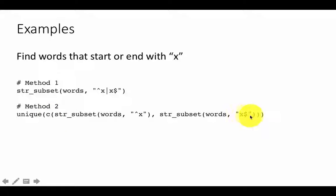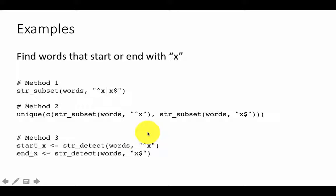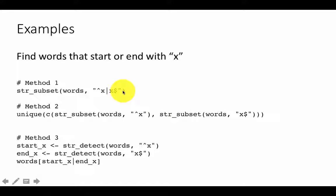Method two constructs two separate expressions: `str_subset(words, '^x')` for words starting with X and `str_subset(words, 'x$')` for words ending with X, then combines them with `c(...)` and applies `unique()` to remove duplicates. Method three uses `str_detect` to get boolean vectors — `start_x` and `end_x` — and then does `words[start_x | end_x]`. Both methods two and three are long-winded; method one is far better.